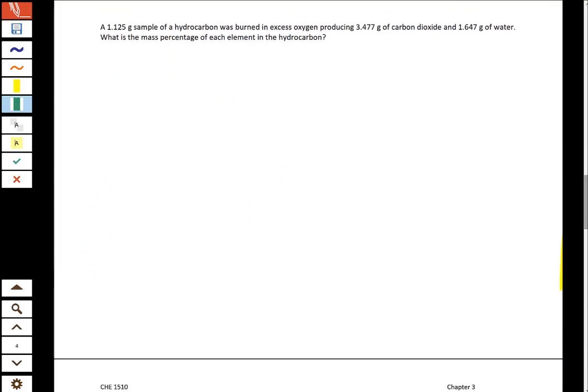So let's look at what an example of this might actually look like. So here this says a 1.125 gram sample of a hydrocarbon was burned in excess oxygen, and it's going to produce so many grams of carbon dioxide and so many grams of water. What is the mass percent of each element in the hydrocarbon? So let's go ahead and start this first problem. So the goal here is to take your carbon dioxide and figure out what mass of carbon is in the CO2, and then separately to take your mass of your water and figure out the mass of the hydrogen that's in that sample of water. So let's work on that.